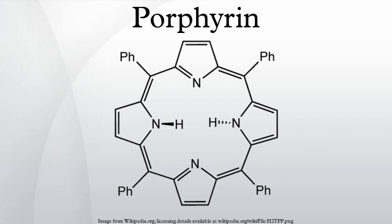Two molecules of ALA are then combined by porphobilinogen synthase to give porphobilinogen (PBG), which contains a pyrrole ring. Four PBGs are then combined through deamination into hydroxymethylbilane, which is hydrolyzed to form the circular tetrapyrrole uroporphyrinogen III.